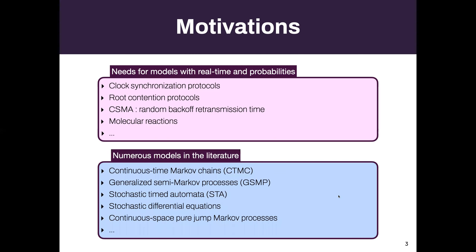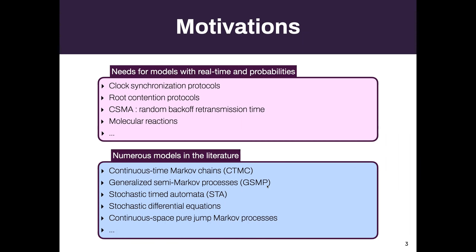We know many kinds of models for those. There are many models in the literature that have these kinds of features. The simplest one, I would say, are continuous time Markov chains. But you have many others like generalized Markov processes, stochastic timed automata, and even continuous space Markov processes. This approach will apply to classes of this kind of models.